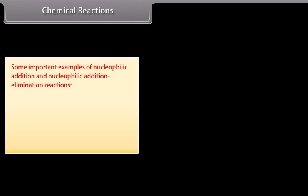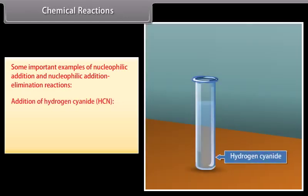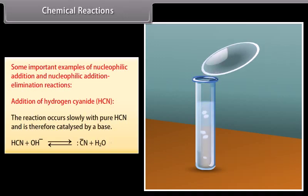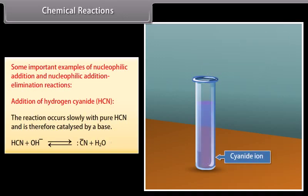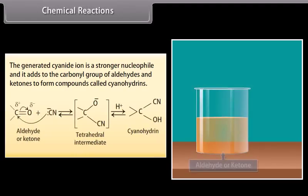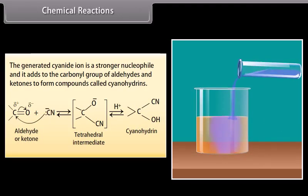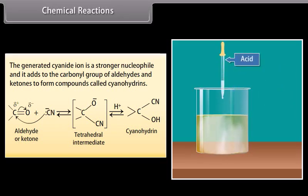Some important examples of nucleophilic addition and nucleophilic addition-elimination reactions. Addition of hydrogen cyanide: the reaction occurs slowly with pure HCN and is therefore catalyzed by a base. The generated cyanide ion is a stronger nucleophile and it adds to the carbonyl group of aldehydes and ketones to form compounds called cyanohydrins.